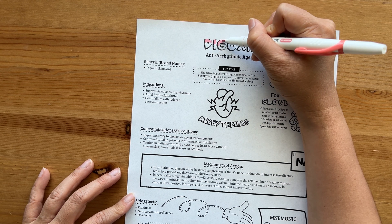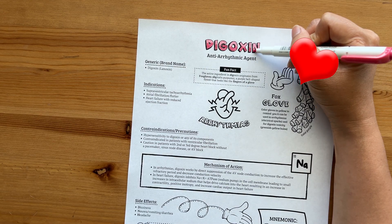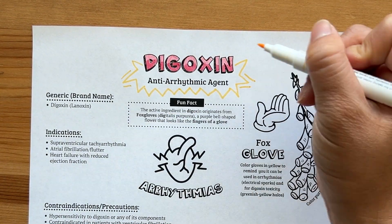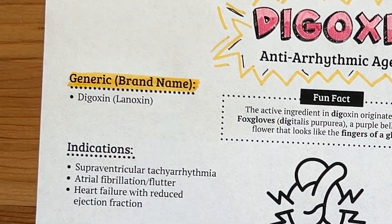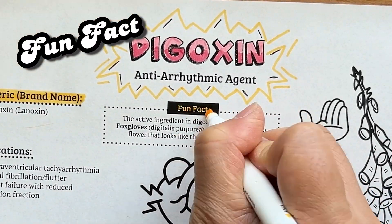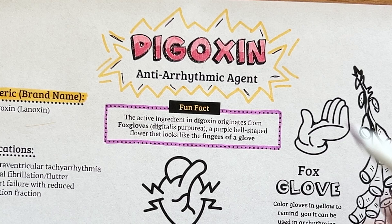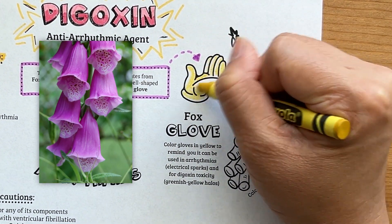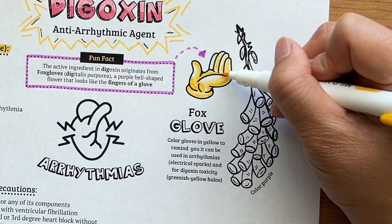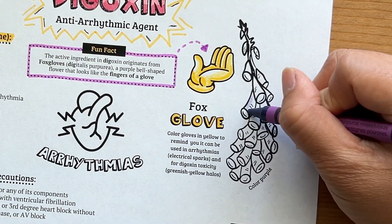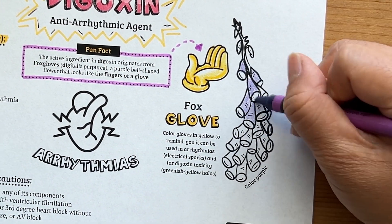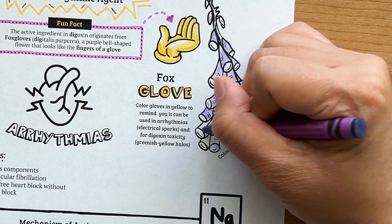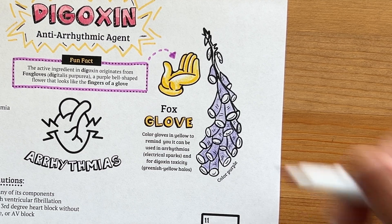The compound in digoxin, digitalis, is the oldest compound in cardiovascular medicine that continues to be used in contemporary clinical practice. The brand name for digoxin is Lenoxin and Digitec. The active ingredient in digoxin originates from a bell-shaped flower called foxgloves, or digitalis purpurea. These flowers are purple, and the inspiration behind their name is based on the fact that they look like digits or fingers of a glove. So when you think of digoxin, use the visual anchor of a glove.